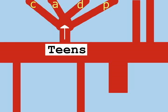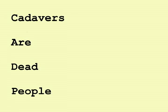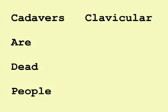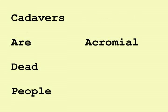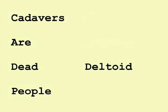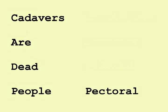These four sub-branches are remembered with the mnemonic: cadavers are dead people. Cadavers — clavicular branch; are — acromial branch; dead — deltoid branch; people — pectoral branch.